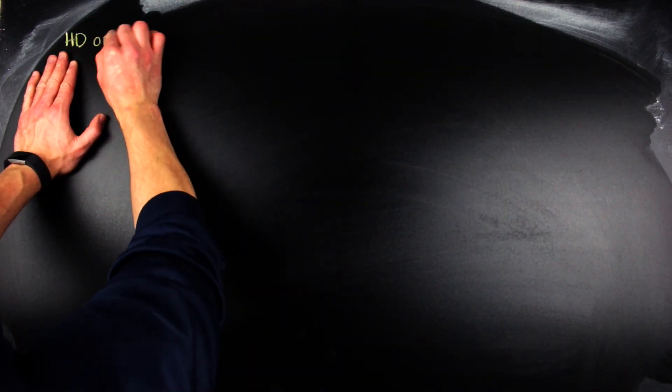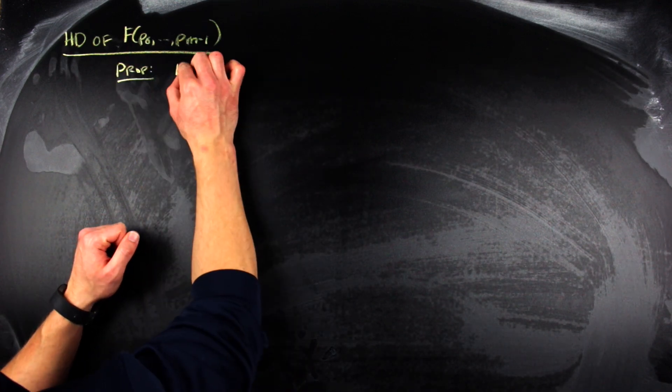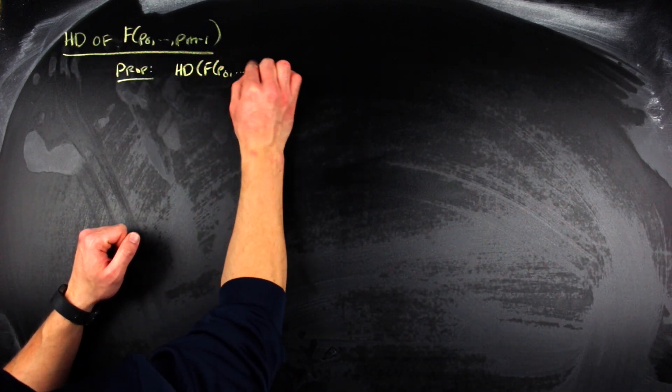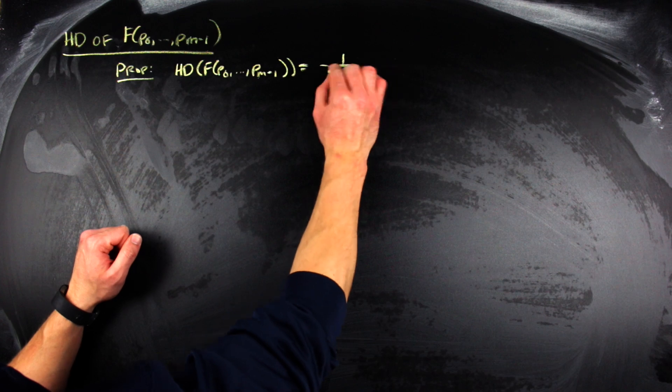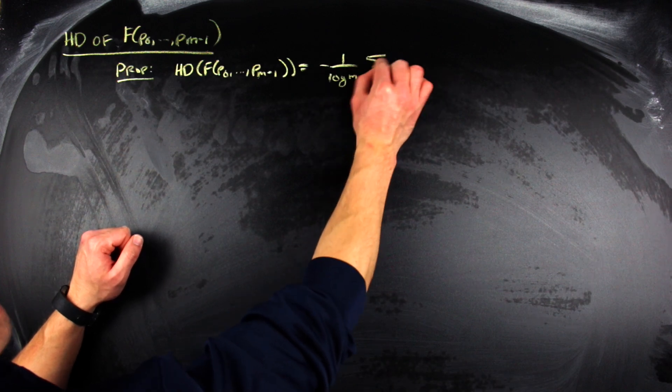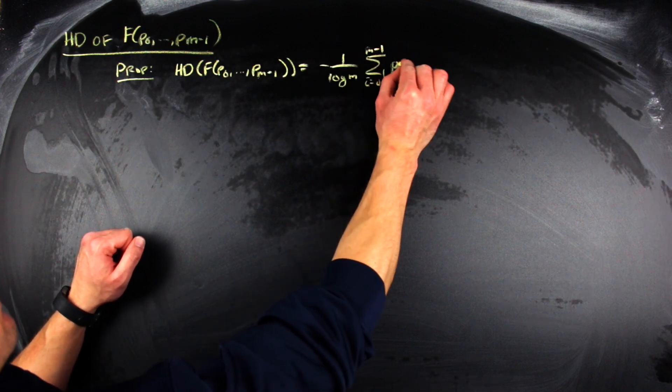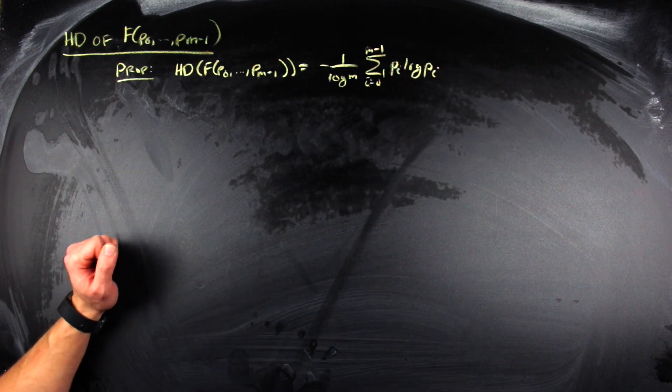So the proposition is that the Hausdorff dimension of F of a probability vector P sub zero up to P sub M minus one is going to be equal to minus one over log of M times the sum I equals zero to M minus one of P sub I times log P sub I. Now, I'm not going to give you a complete argument, but I'm going to give you an idea of how this works.